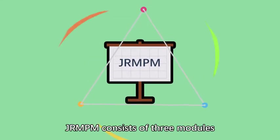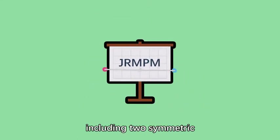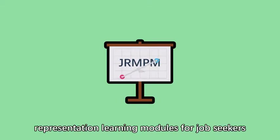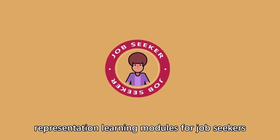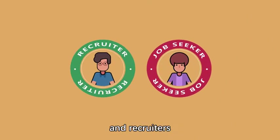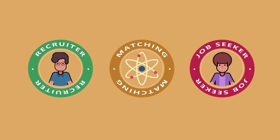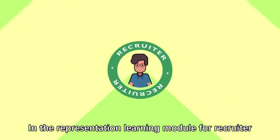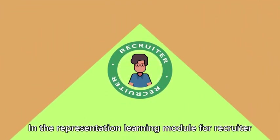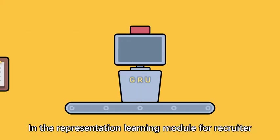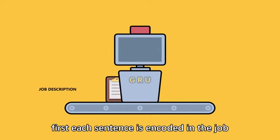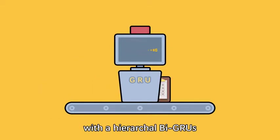JRMPM consists of three modules, including two symmetric representation learning modules for job seekers and recruiters, and a matching module. In the representation learning module for the recruiter, first each sentence is encoded in the job hierarchically by GRUs.